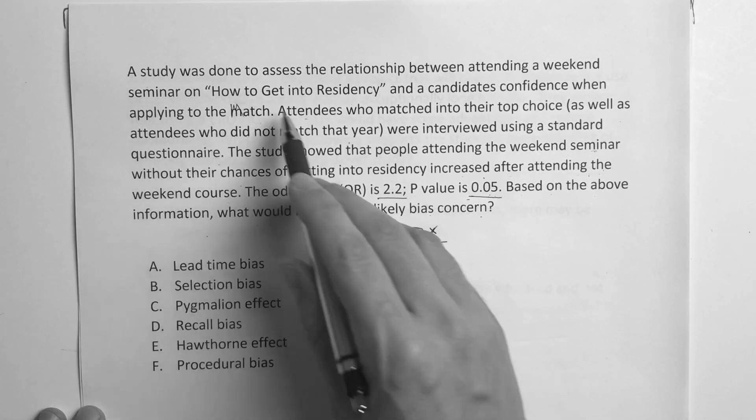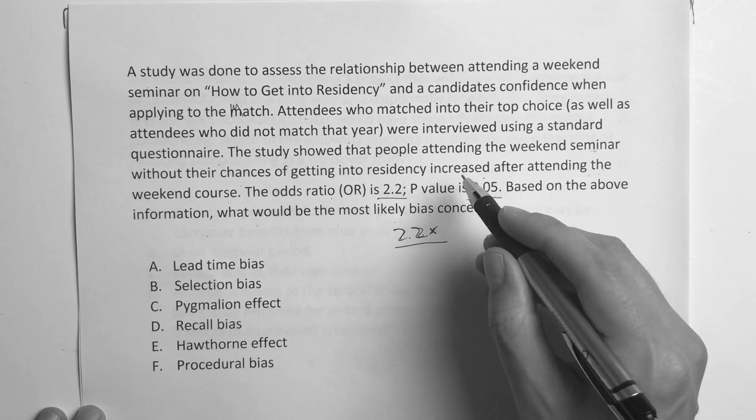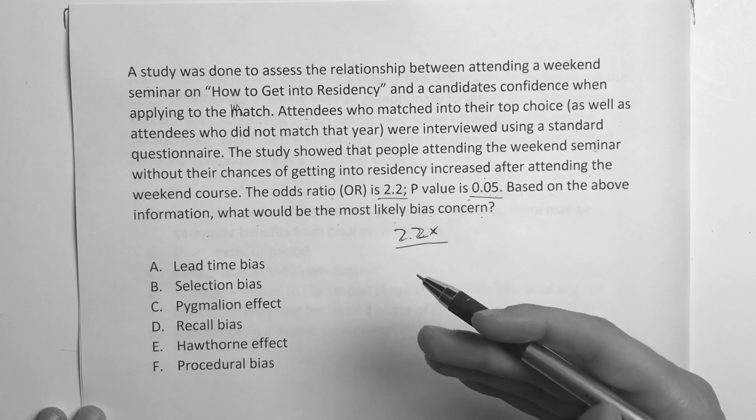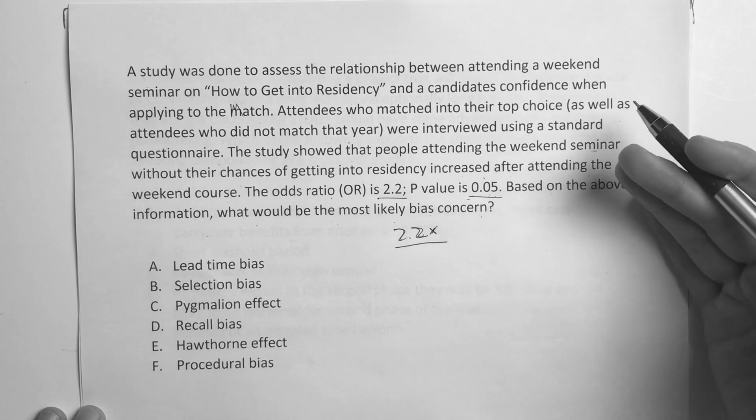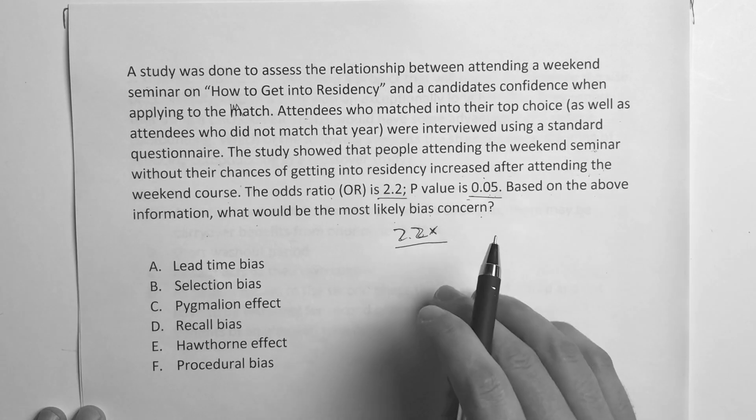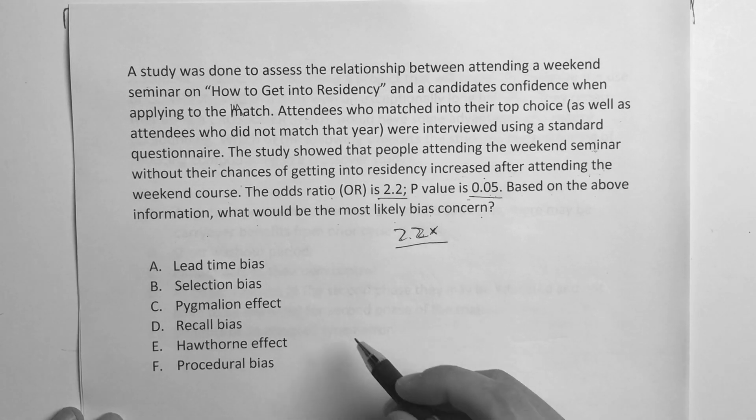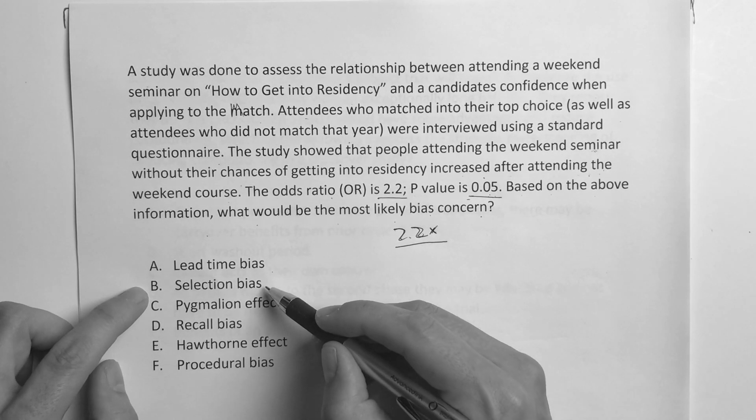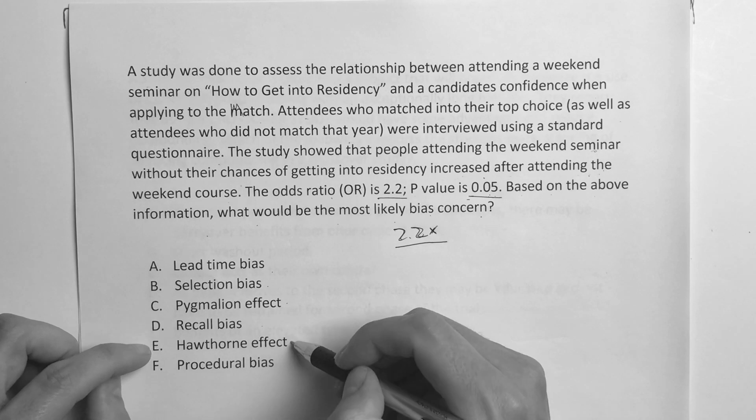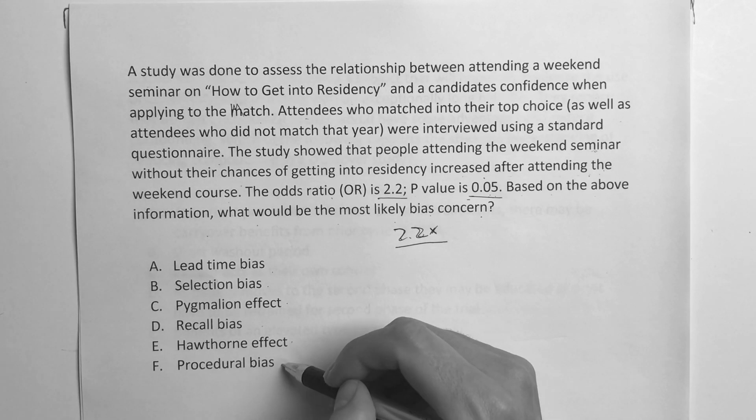So essentially there's this seminar and then they sent a questionnaire to these guys after the fact. One group of people who matched and one who didn't. So what kind of bias might that be? Let's look at our choices. We have lead time, selection, pygmalion, recall, hawthorne, and procedural bias.